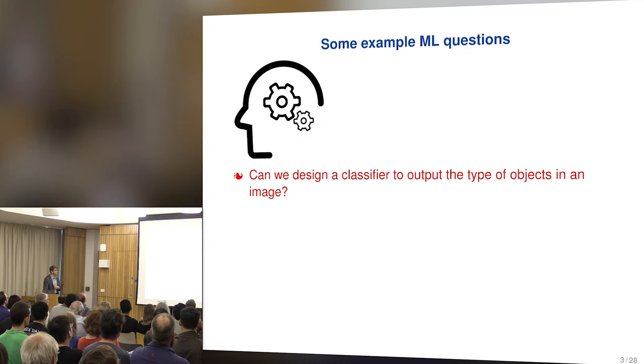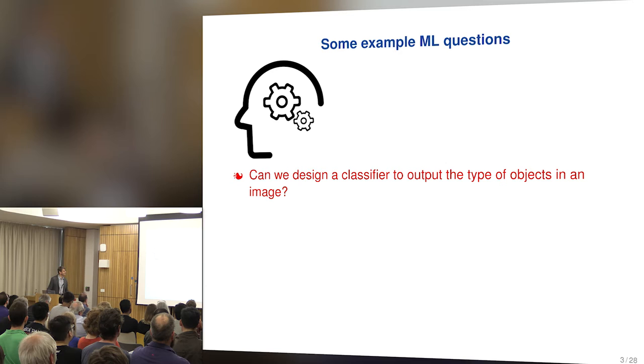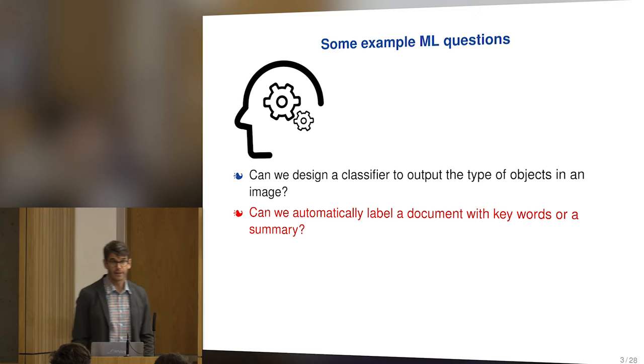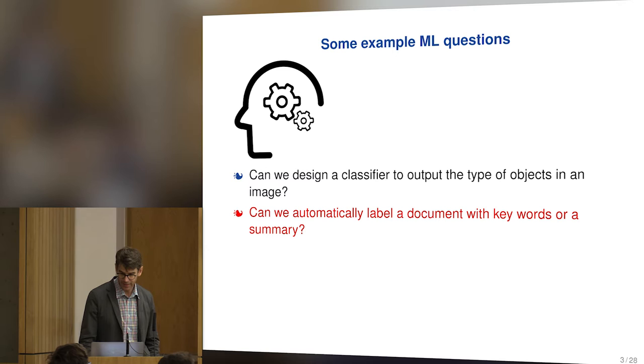Some example canonical machine learning questions are: can we design a classifier to output the type of objects in an image? I remember working on this type of problem with Larry Carin at Duke about a decade ago — the state of the art wasn't very good then, but it's gotten really dramatically better, particularly for natural images. Can we automatically label a document with keywords or a summary? That's often gotten a lot better too, and you might even want the summary to be in coherent English.